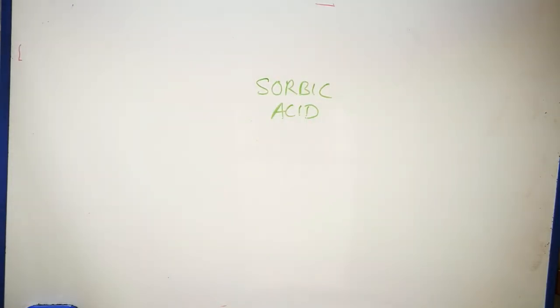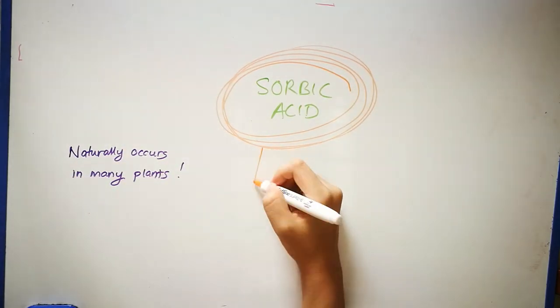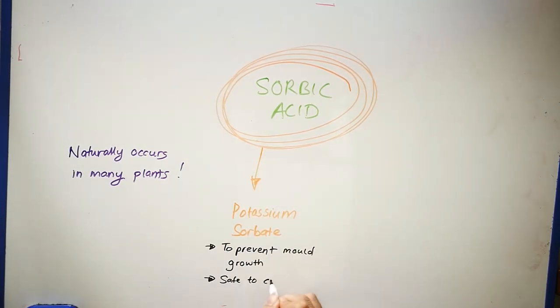Now let us move on to sorbate acid, which naturally occurs in several plants. This chemical derivative potassium sorbate aids in preventing mold growth on bakery products and is safe to consume.